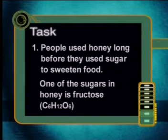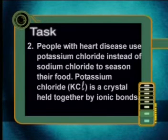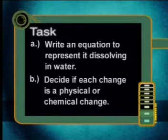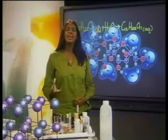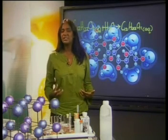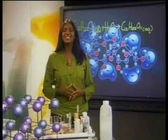Here is your task for today. People used honey long before they used sugar to sweeten food. One of the sugars in honey is fructose, C6H12O6. People with heart disease use potassium chloride instead of sodium chloride to season their food. Potassium chloride, KCl, is a crystal held together by ionic bonds. For each substance, write an equation to represent it dissolving in water and decide if each change is a physical or chemical change. Today we have seen that the simple act of changing the taste of our food involves amazing activity at a molecular level — countless bonds break and countless bonds form. This bond breaking and bond formation involves energy transfer that we will investigate more fully in the next lesson. Goodbye.